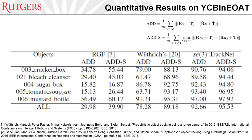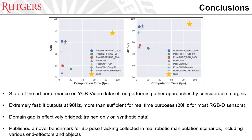Here are the quantitative results from the YCB-InEAT dataset using the same evaluation metrics as in the YCB video benchmark. Again, SC3 TrackNet achieves the state-of-the-art. To summarize, in this work we presented SC3 TrackNet which achieves state-of-the-art performance on the YCB video dataset, outperforming other approaches by considerable margins. It is also extremely fast, running at 90Hz, much more efficient than required for real-time use. The domain gap is effectively bridged, allowing training only on synthetic data. Finally, we also published a novel benchmark for 6D-pose tracking collected in real robotic manipulation scenarios, including various end-effectors and objects. Thank you.